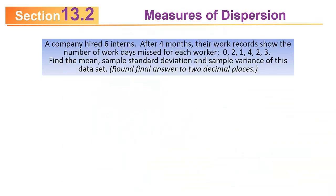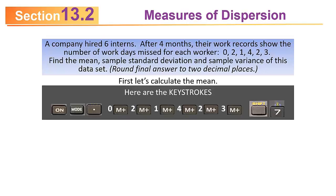How about this example? A company hired six interns. After four months, their work records show the number of work days missed for each worker: 0, 2, 1, 4, 2, 3. Find the mean, sample standard deviation, and sample variance, rounding your final answer to two decimal places. First, calculate the mean. Press on, press mode period, then enter the data followed by M pluses. Then hit shift 7. The mean turns out to be 2.